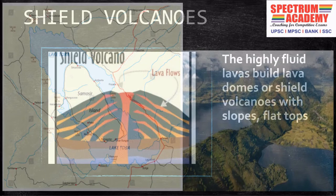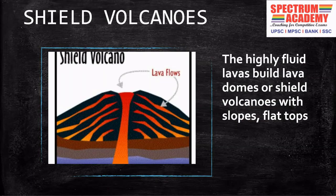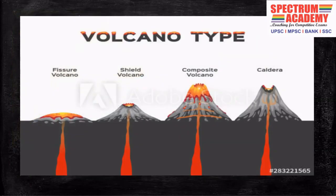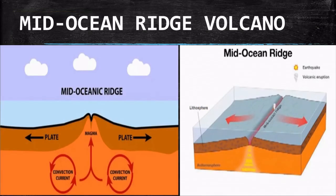One other type of volcano is shield volcanoes, also called lava domes — these have gently rising slopes with broad and flattened tops. An example is the volcanoes of Hawaii. The next type is mid-ocean ridge volcanoes. As the name suggests, these volcanoes occur in oceans with the concept of divergent plate boundaries, meaning the plates move away from each other, causing frequent eruptions of volcanoes there.